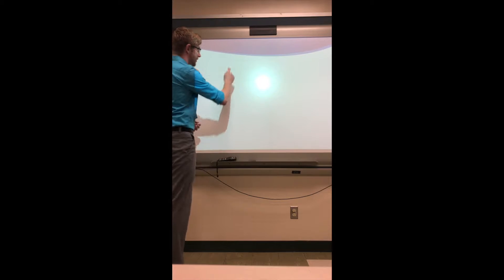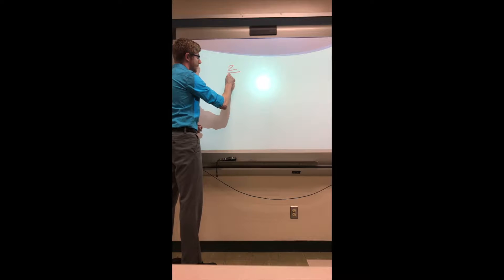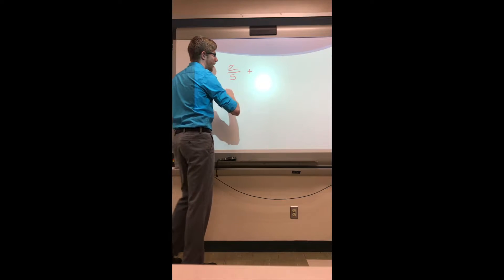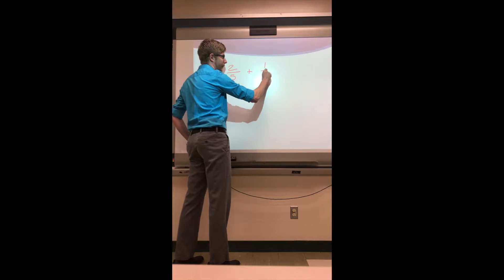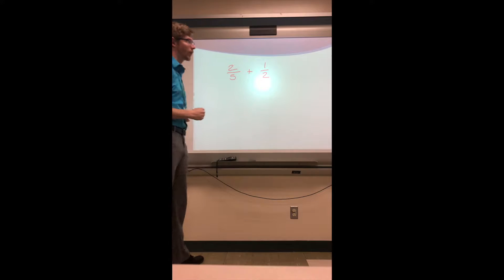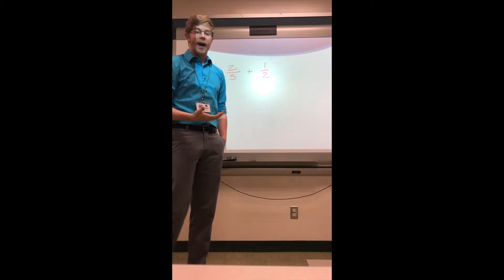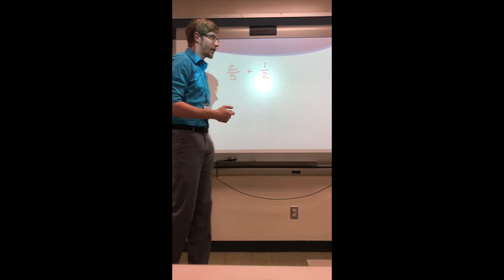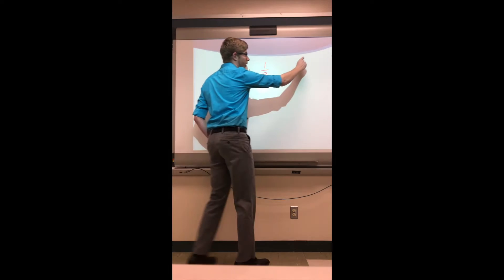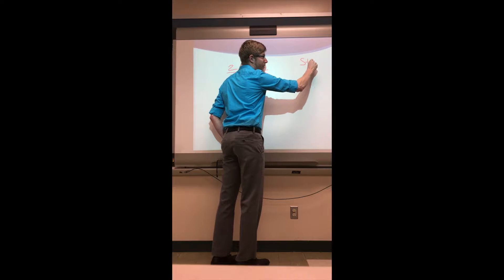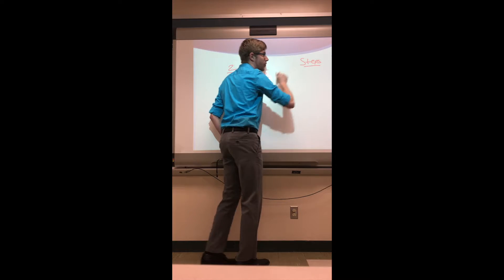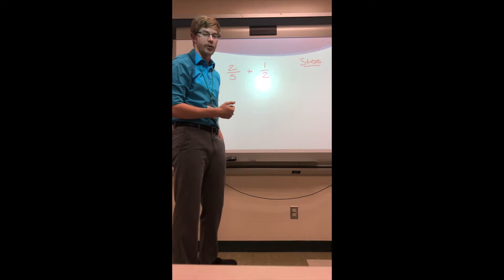So let's say that I want to add two fractions together. I'll stick with the two-fifths that I just used and let's say I want to add it to one-half. Whenever we are adding or subtracting, and both of these steps are the same, so in your notes over here I'm going to make a column for our steps.